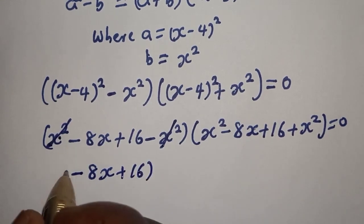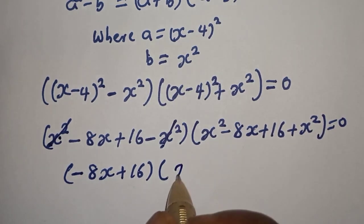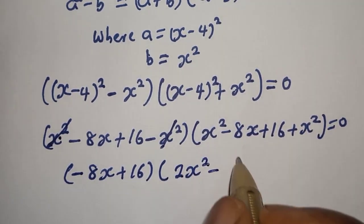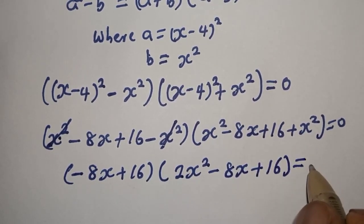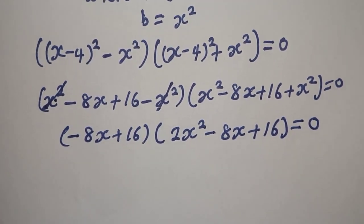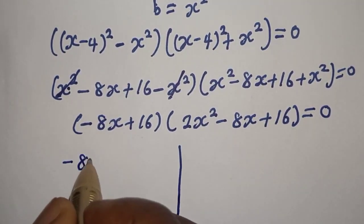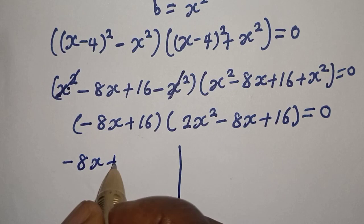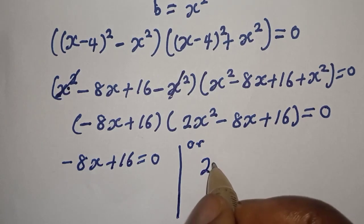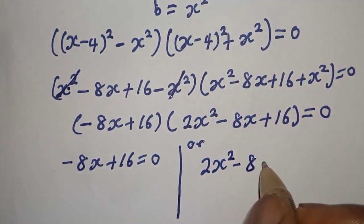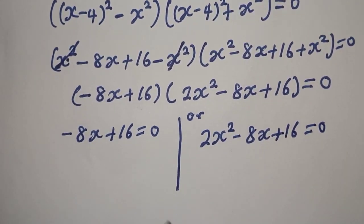We are left with minus 8s plus 16, multiplied by s squared plus s squared, which gives 2s squared minus 8s plus 16, equal to zero. There are two cases: Case 1 is minus 8s plus 16 equals 0, and Case 2 is 2s squared minus 8s plus 16 equals 0.